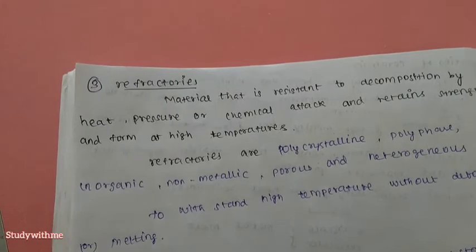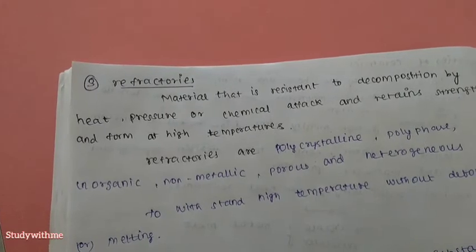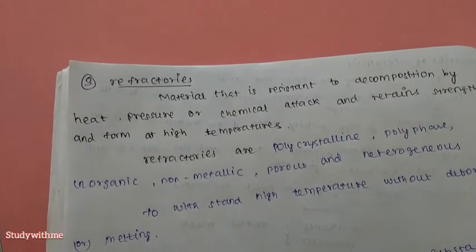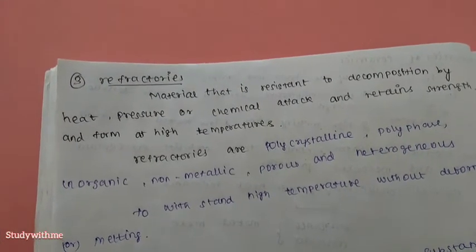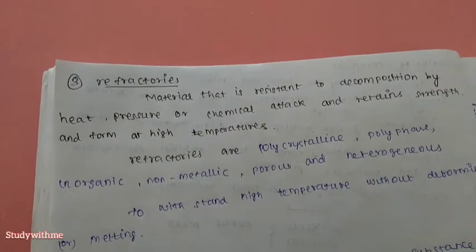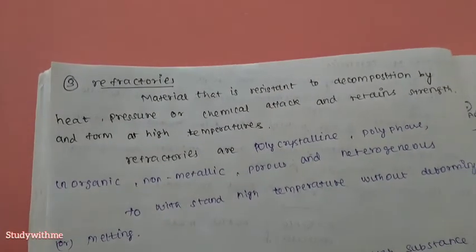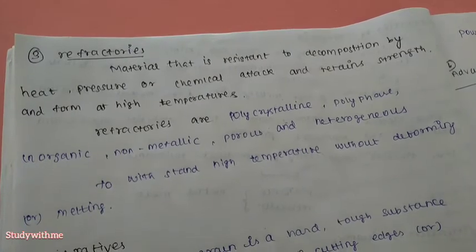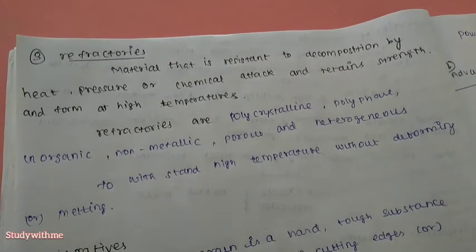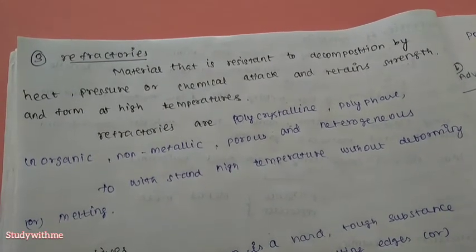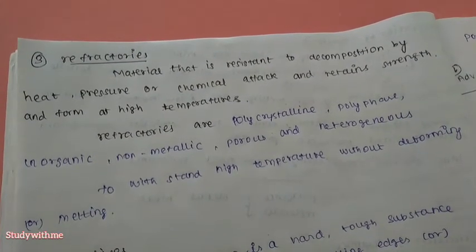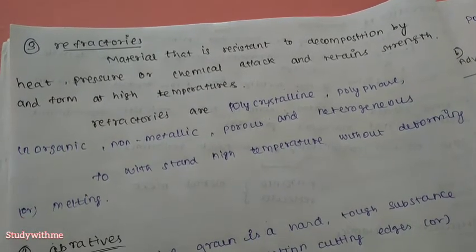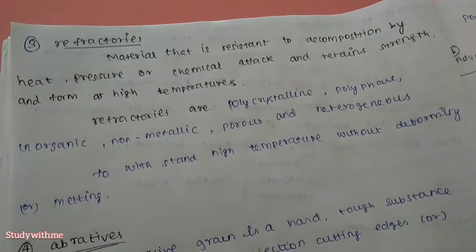Refractories are materials that resist decomposition by heat, pressure, or chemical attack, and retain strength without deforming at high temperatures. They are polycrystalline, polyphase, inorganic, non-metallic, and porous, able to withstand high temperatures without deforming or melting.